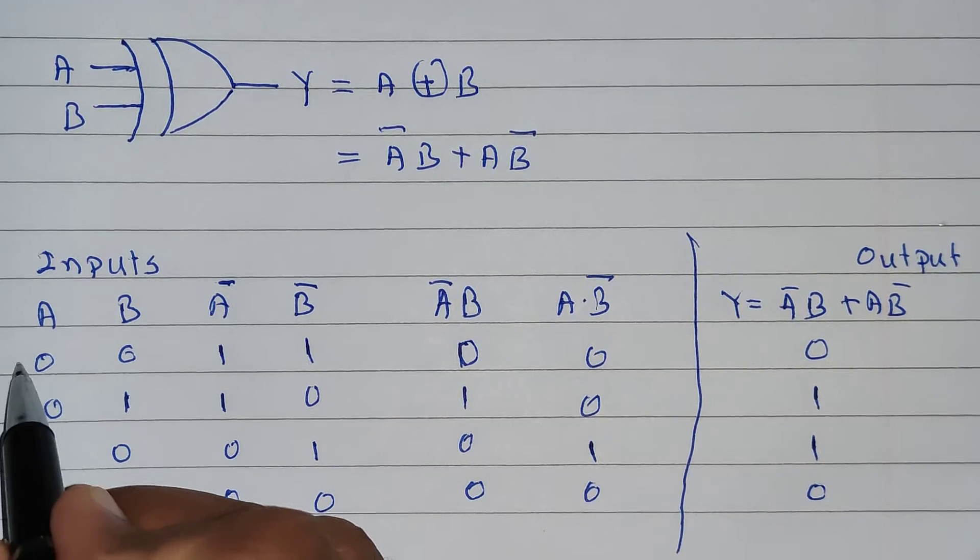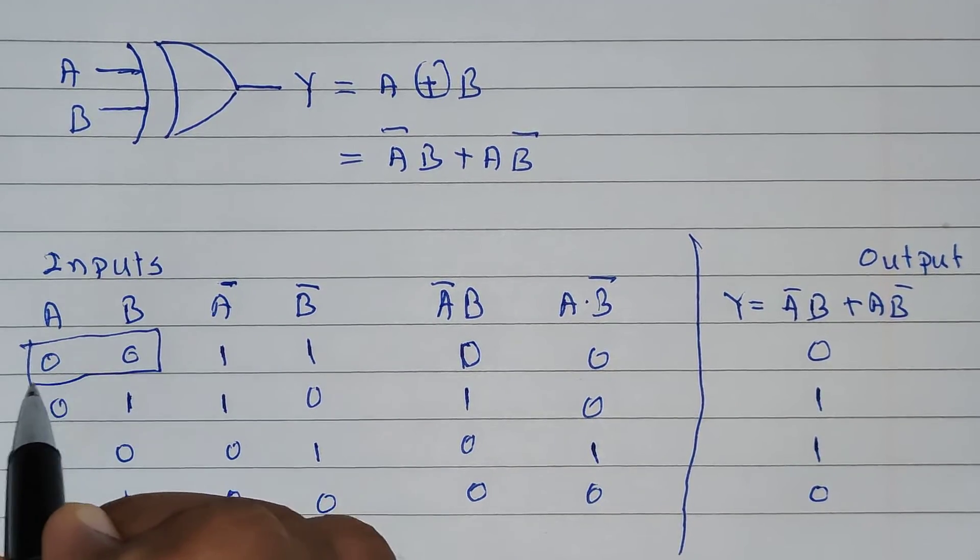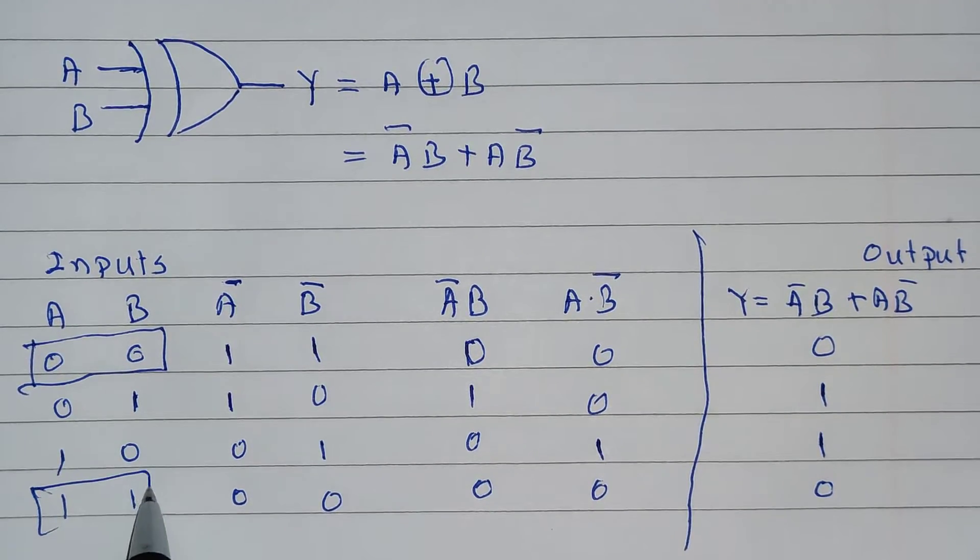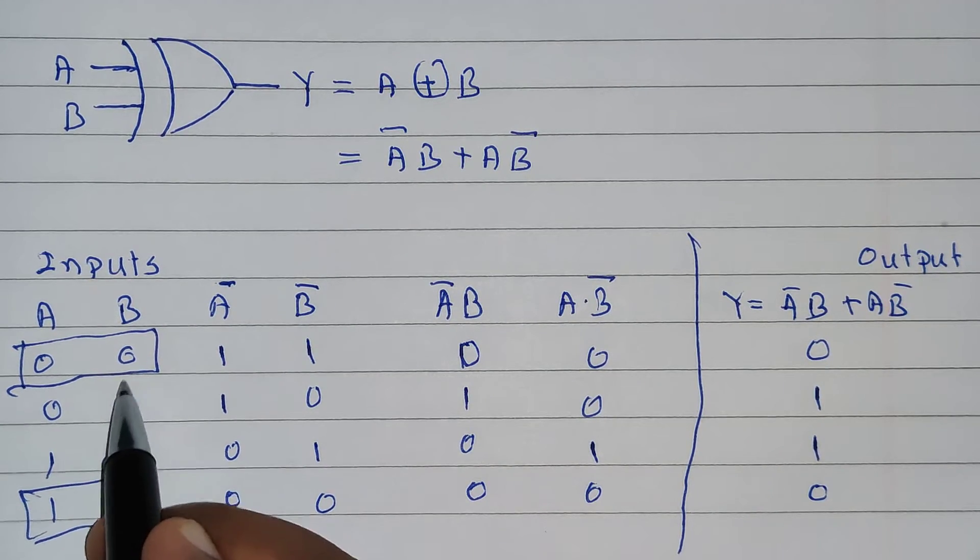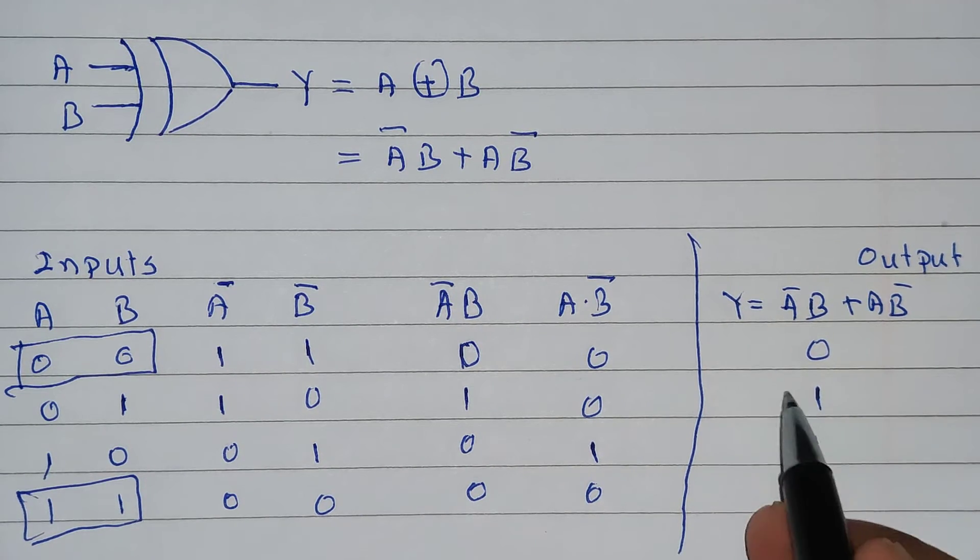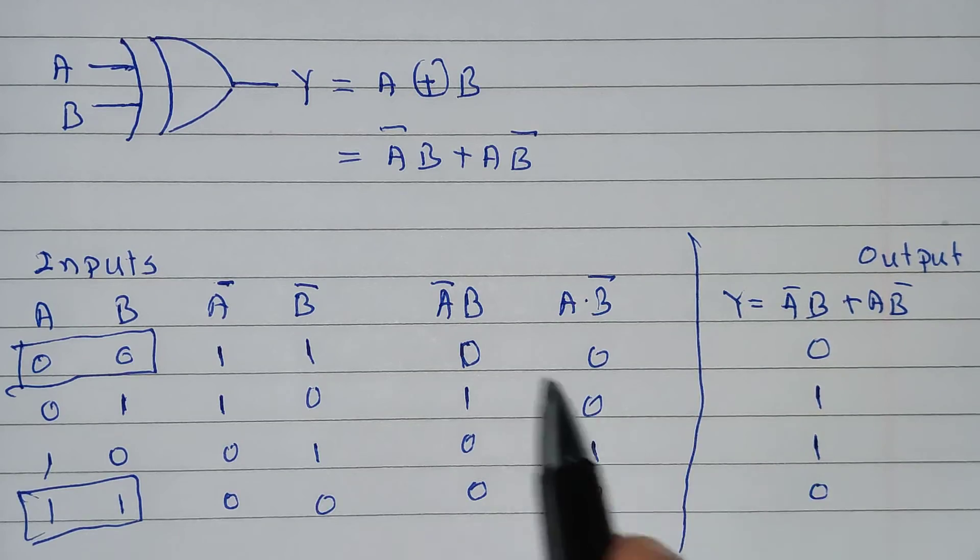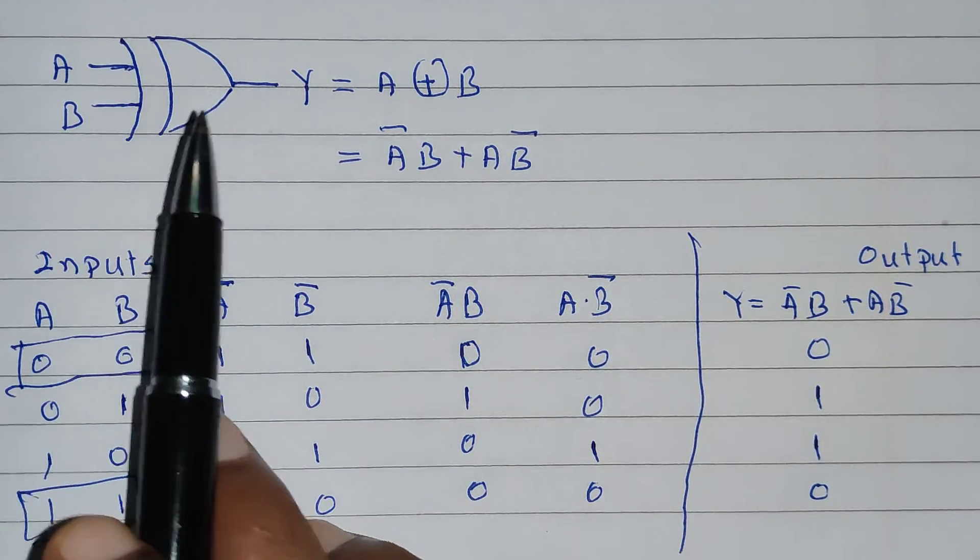And when inputs are not exclusive, these are not exclusive because they are same. 0 0, 1 1, not exclusive. At that time output is 0. That's why this gate is called as exclusive OR gate.